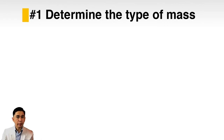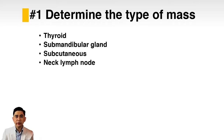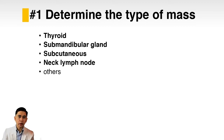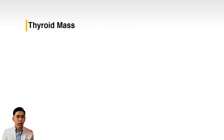First, determine the type of mass the patient has. Among neck masses in adults, the most common types are thyroid masses, submandibular gland masses, subcutaneous masses, neck lymph nodes, and others which are not that common. Regardless of which type the neck mass belongs to, it's still the same approach that I will discuss in this lecture.